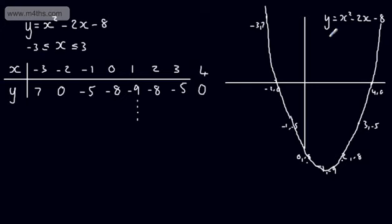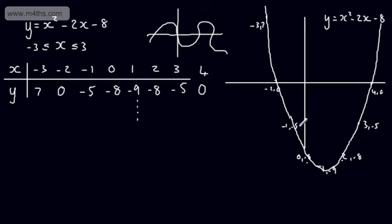Let's look at the key features of a good sketch. The first thing it should show is the correct shape. This is a quadratic equation — we know quadratics are parabolas. If you drew a straight line or some kind of squiggle, that would not be acceptable. We know it's either going to open upwards or open the other way.